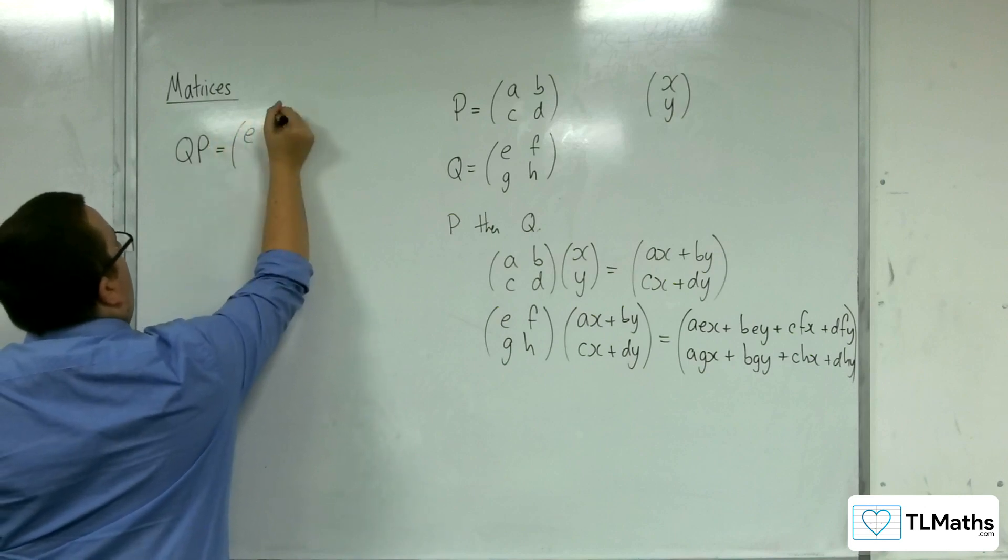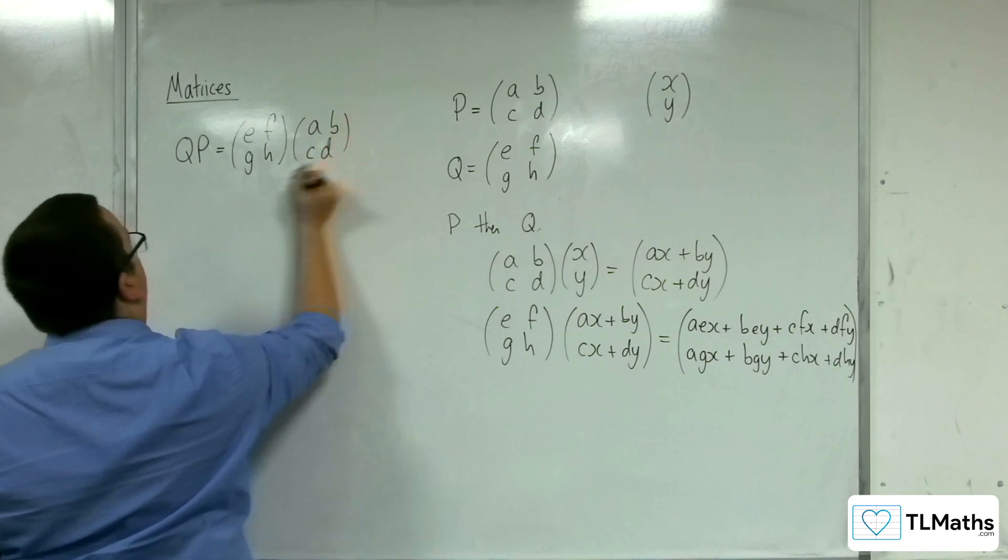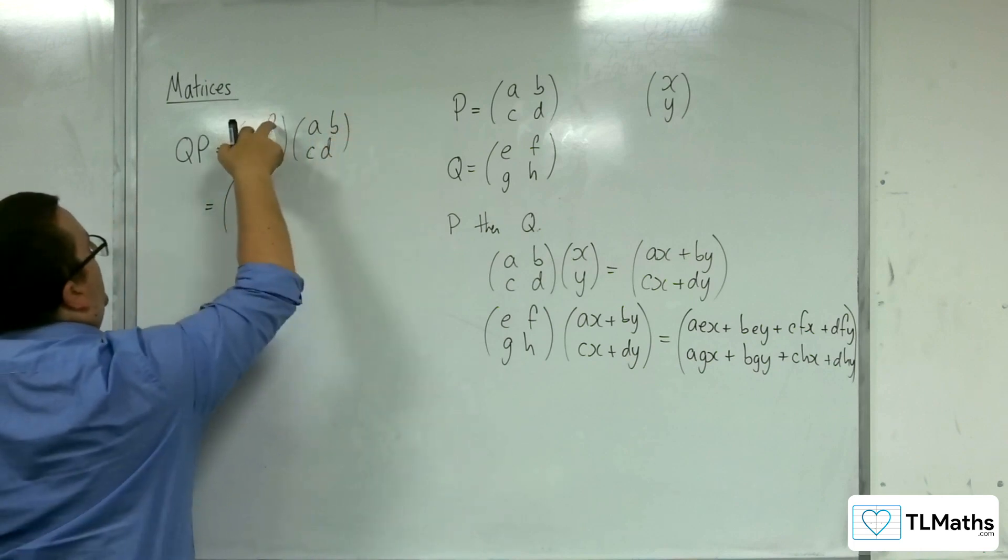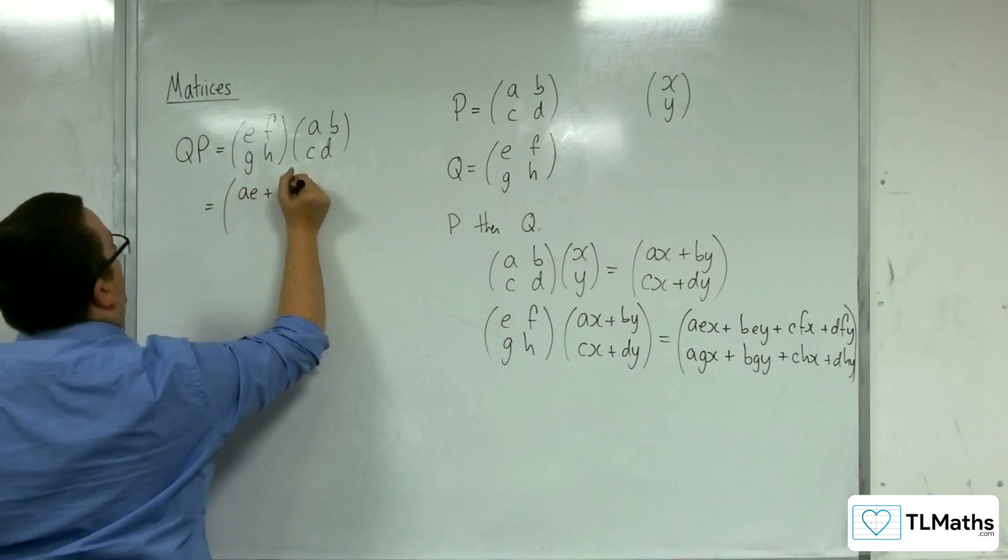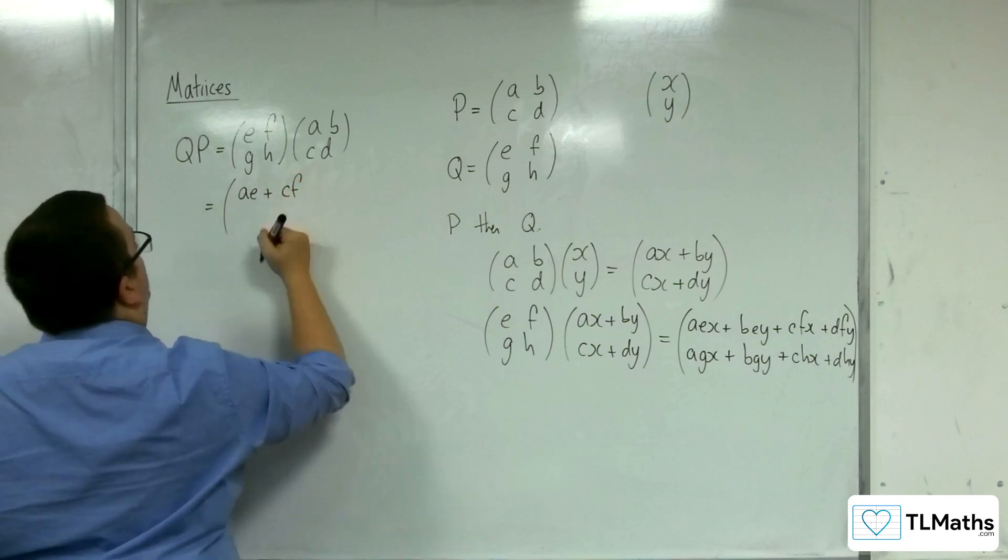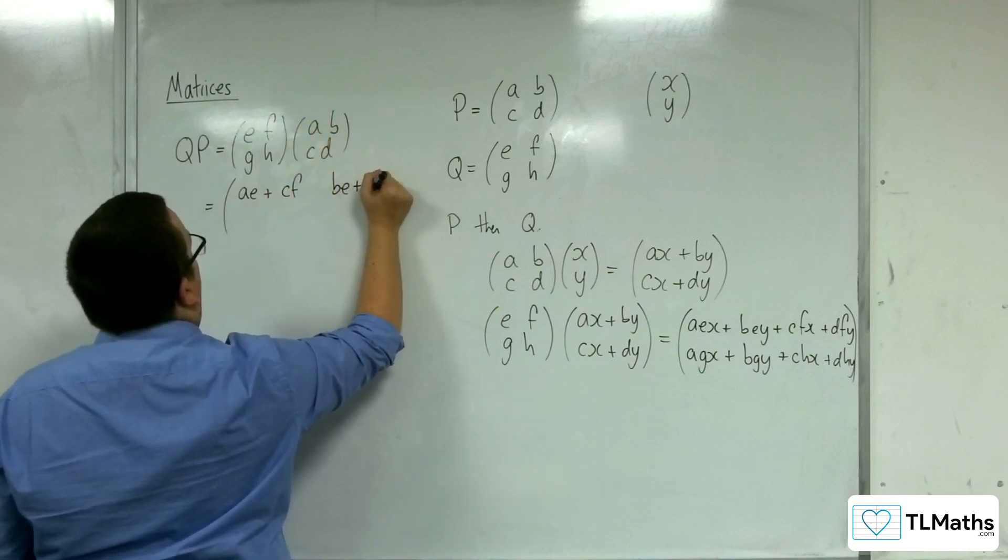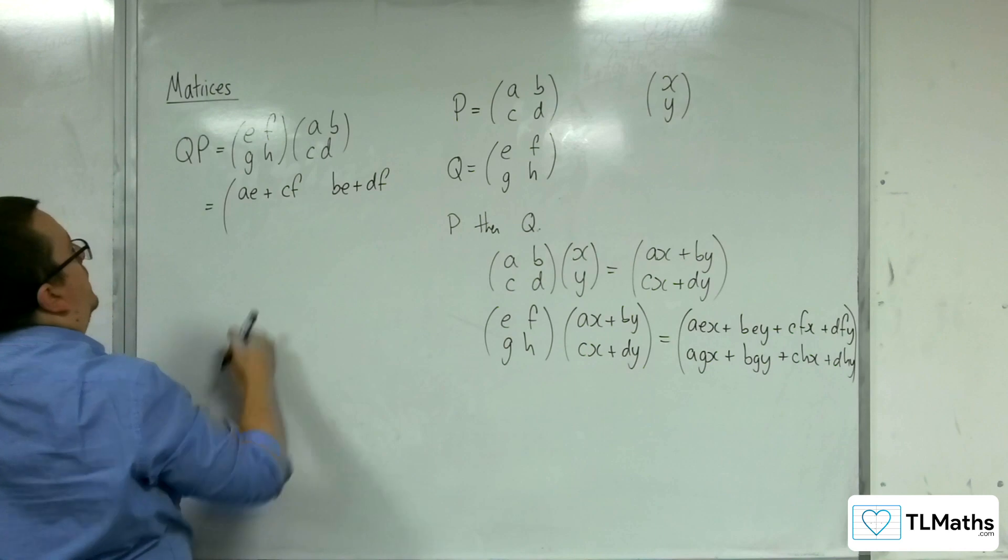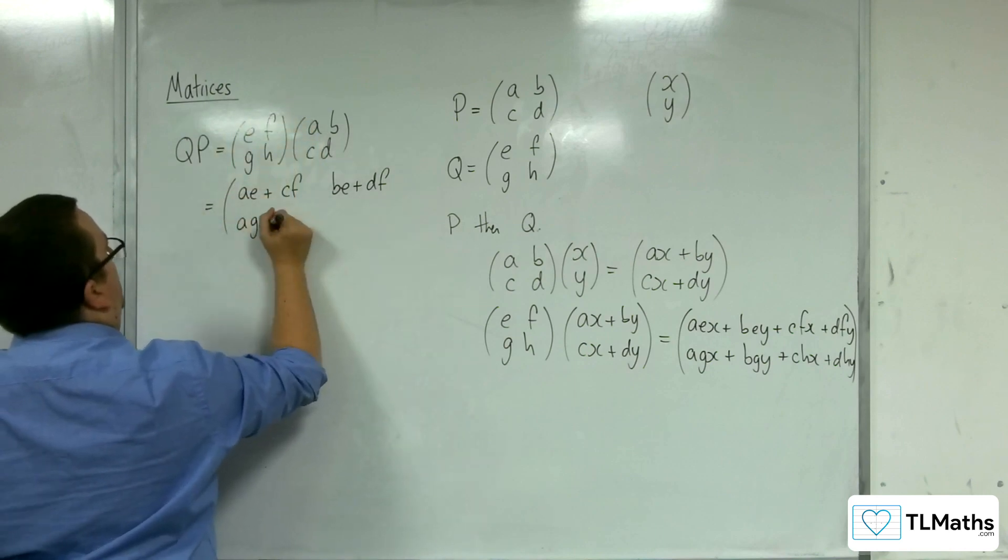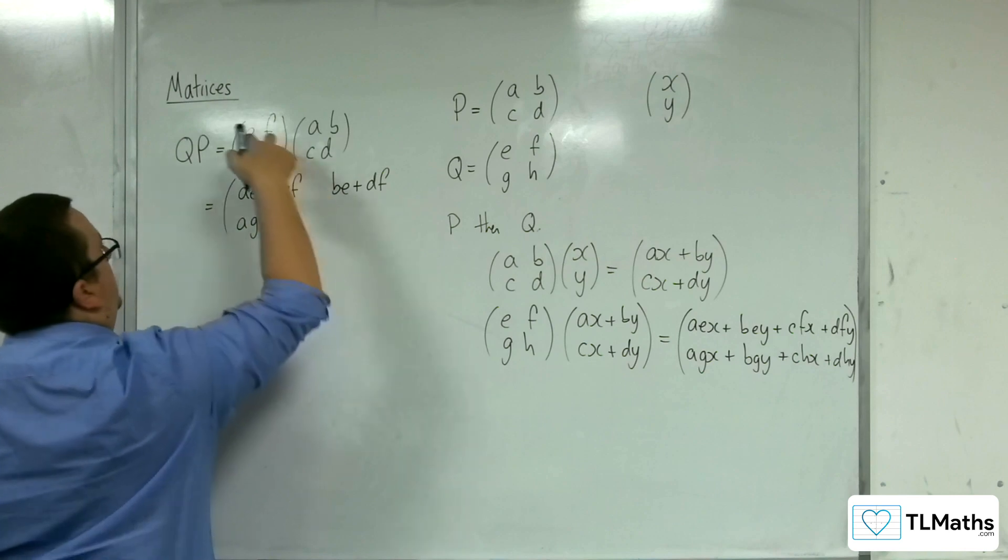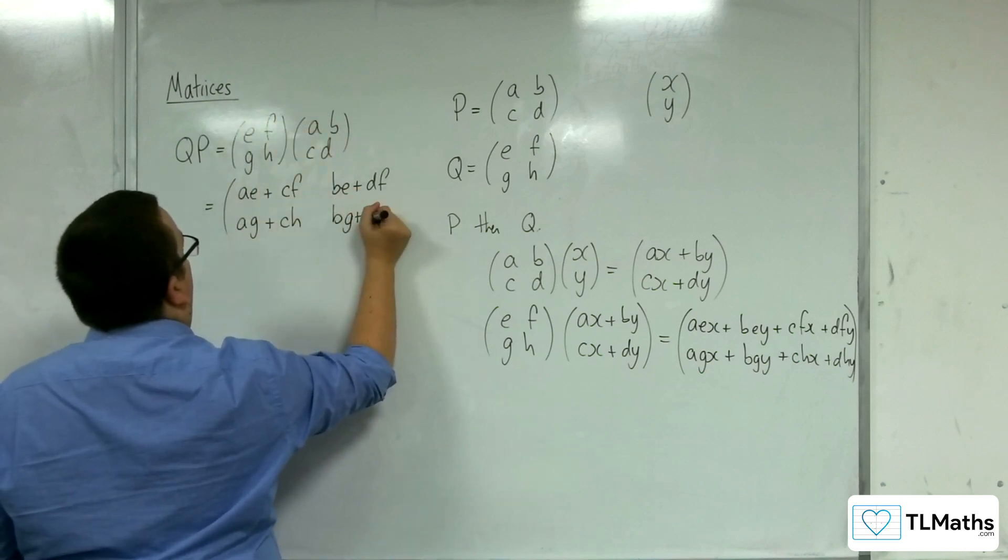Then that's E, F, G, H, multiplying with A, B, C, D. So E, F times A, C, so A, E plus C, F. E, F times B, D, so B, E plus D, F. G, H times A, C, so A, G, plus C, H. And G, H times B, D, so B, G, plus D, H.